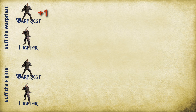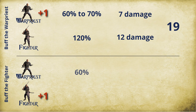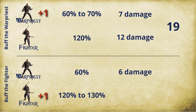But let's look at what actually happens. If I give the plus one to the war priest, he moves from 60 to 70 percent of average damage. Since he deals 10 damage on a hit, 70 percent of 10 is 7 average damage. The fighter contributes 120 percent of average damage — 120 percent of 10 is 12 average damage. Add them together: 19 average damage total. Now if I buff the fighter instead, the war priest stays at 60 percent — that's 6 average damage — and the fighter moves from 120 to 130 percent, which is 13 average damage. That also totals 19 average damage.